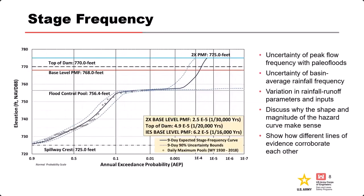Starting with the loading: for the stage frequency curve, you need to be able to explain the uncertainty in the peak flow frequency and the basin average rainfall, along with how the rainfall-runoff parameters and inputs might vary. Most importantly, you need to be able to explain the shape of the curve — why does the slope change, why does it flatten out?